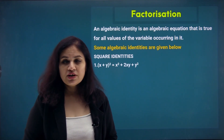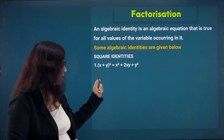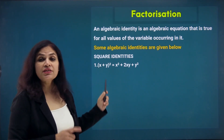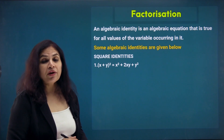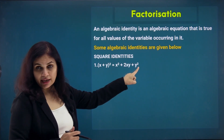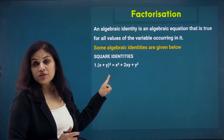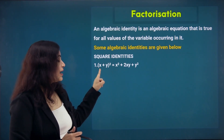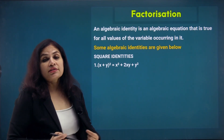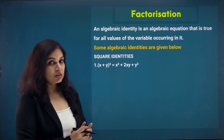Starting with square identities, the first identity is the identity of a whole square. It states that the square of the sum of two numbers is equal to the square of the first number, the square of the second number, and twice the product of the two numbers. Most often students get confused and write (x+y)² as the sum of the individual squares, which is wrong.